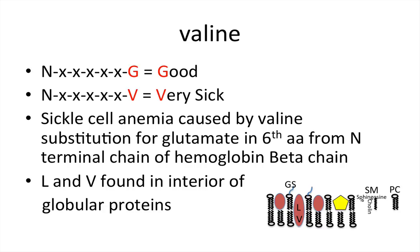Valine is a troublemaker — it causes sickle cell anemia. On the hemoglobin beta chain, there is a substitution at the sixth amino acid from the N-terminal: glutamate is swapped out for valine. V is for very sick, G is for good — so valine makes you very sick.